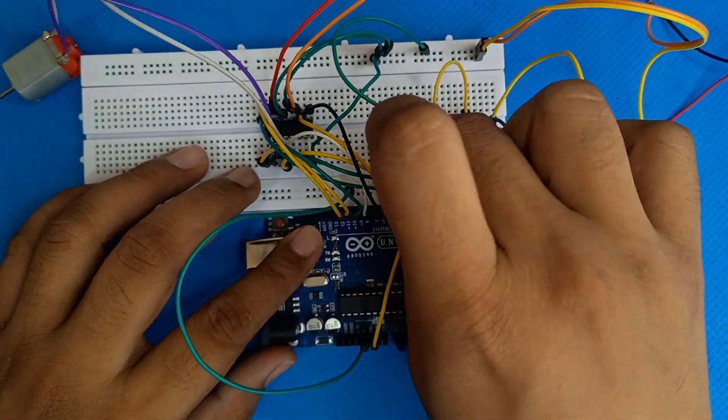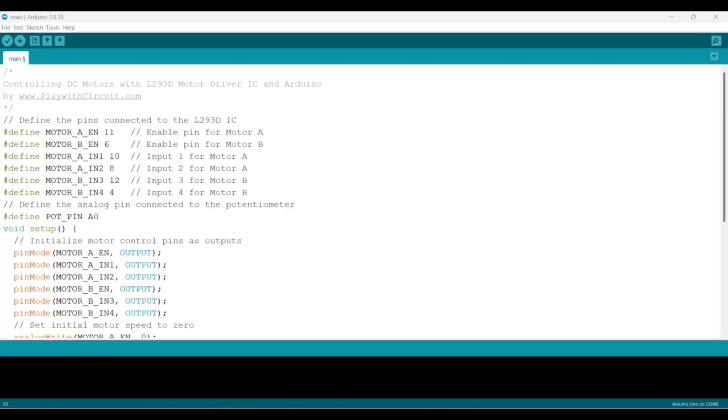Now that we have our circuit setup ready let's move to the coding part. Here is the code to control the motors. So this is the coding part for our project.